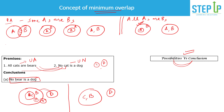The question asks: can we say 'no bear is a dog'? It is true in some cases, but in other cases there is overlap between bear and dog, making it false. Since it is not true in all possible cases, it is not a valid conclusion. If the question asked whether it was a possibility, the answer would be yes — but as a conclusion, it must hold in every possible case. That is the concept of minimum overlap.